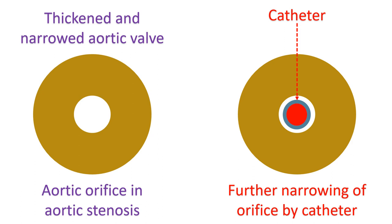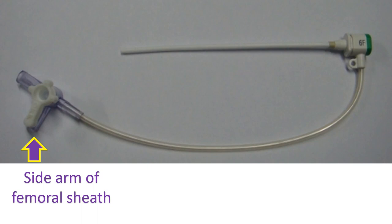A simplified method is to connect the sidearm of the femoral arterial sheath to a pressure transducer. But if the catheter and sheath are of the same size, the pressure tracing would be damped. For a good femoral pressure tracing, the sheath should be at least one French size larger than the catheter.